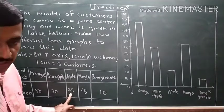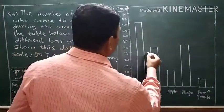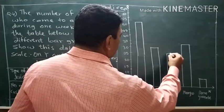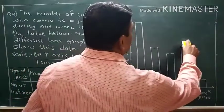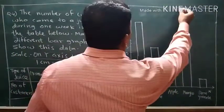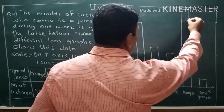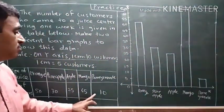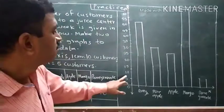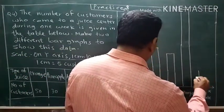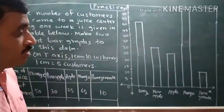For apple, twenty-five customers are there. For mango, sixty-five customers are there. Sixty-five is coming over here. Now our scale is different, so we are going on to ten — this will become double. When we take the scale one centimeter is equal to five customers, the bar heights become double compared to the previous graph.